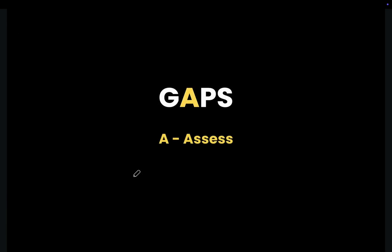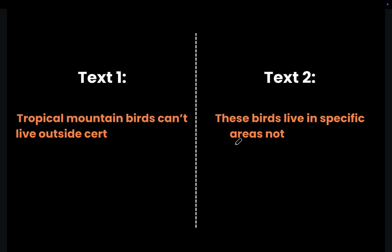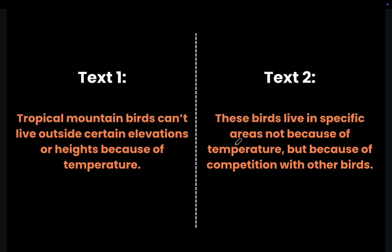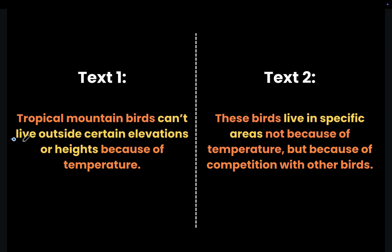Now let's move on to the second step in GAPS: A — Assess both sides. Be careful. The question is asking for the thing both authors agree on. They disagree on why — one says temperature, the other says competition — but they both agree on one thing: that the birds are limited in where they can live.